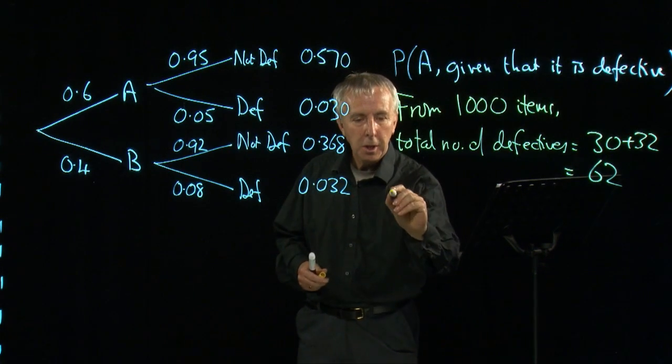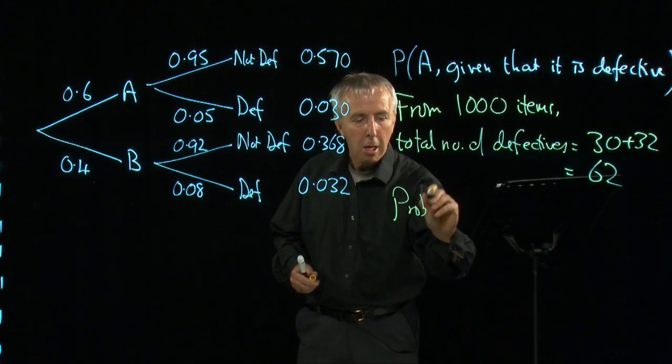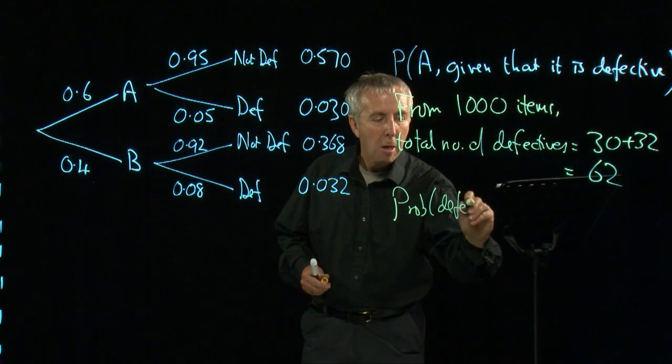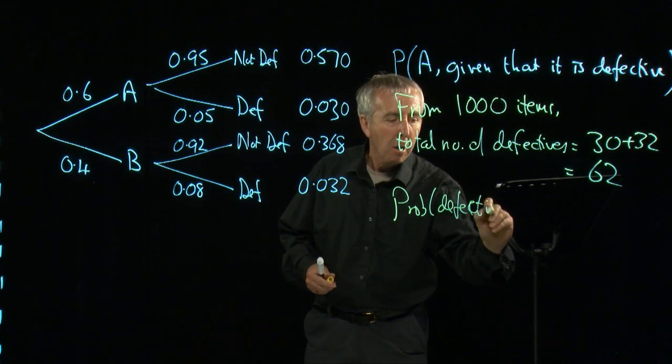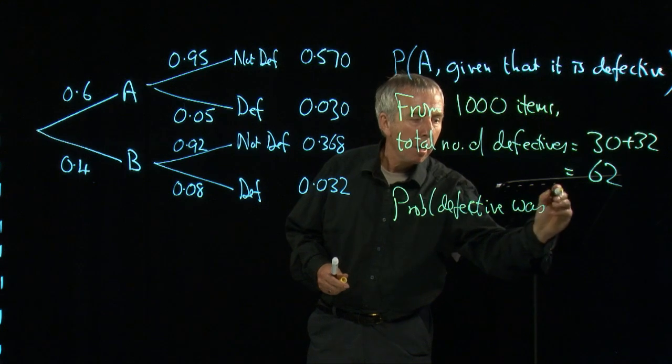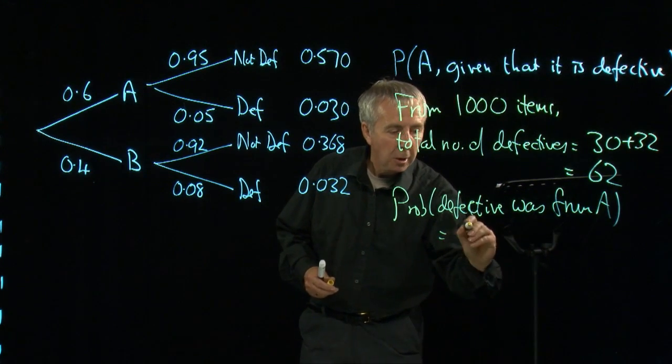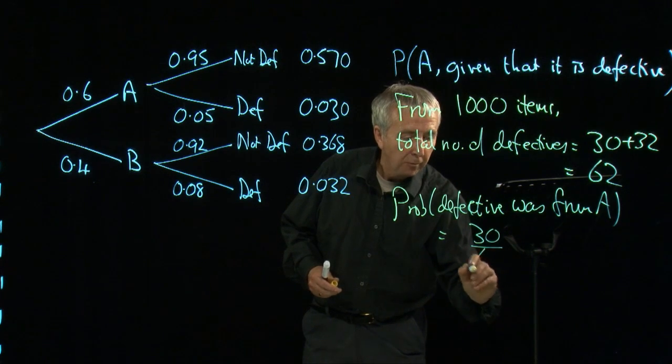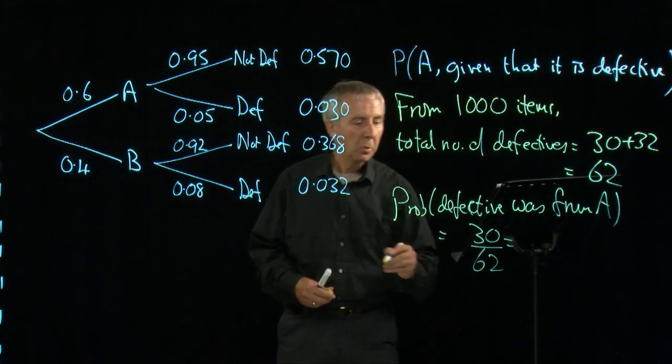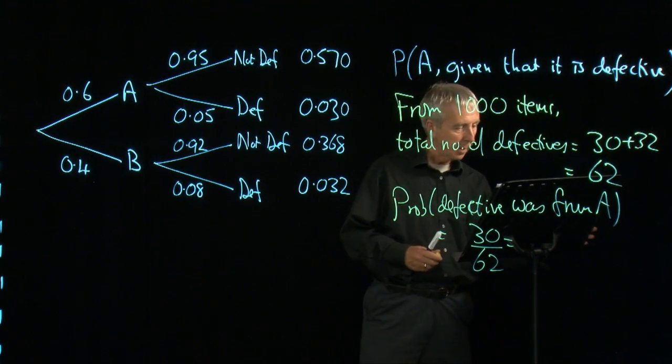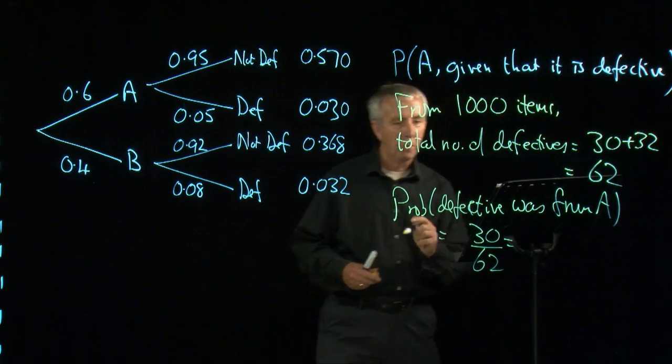So the probability that the defective was from A is those 30 out of the 62, which is just below half. And I've got the answer here, it's 0.484.